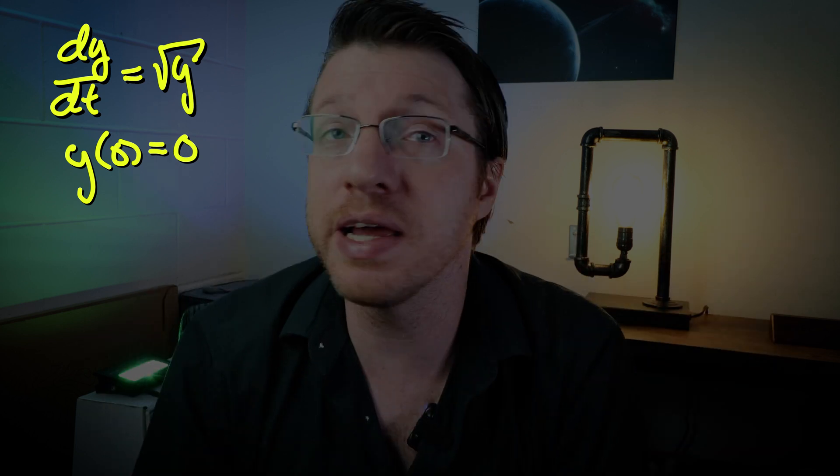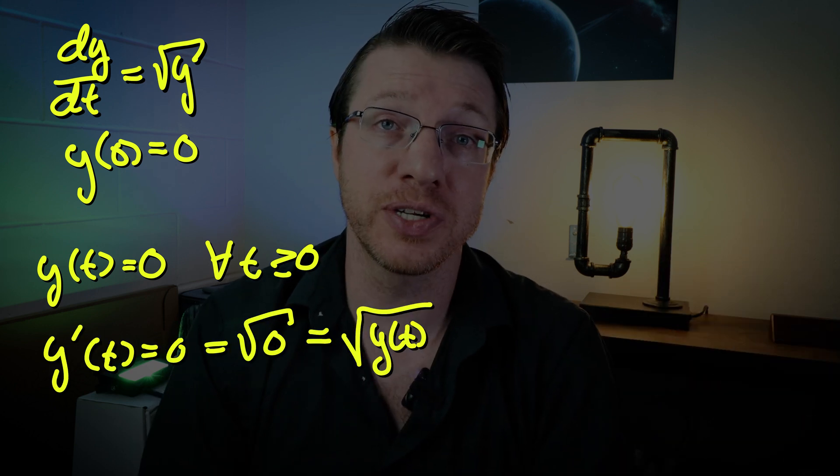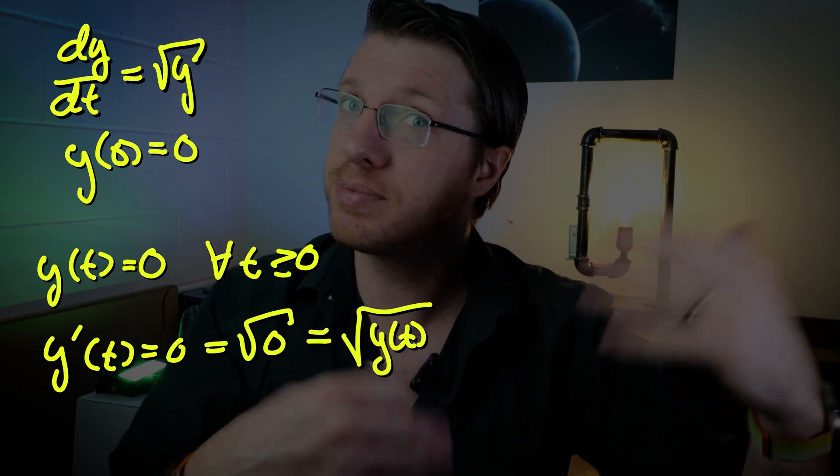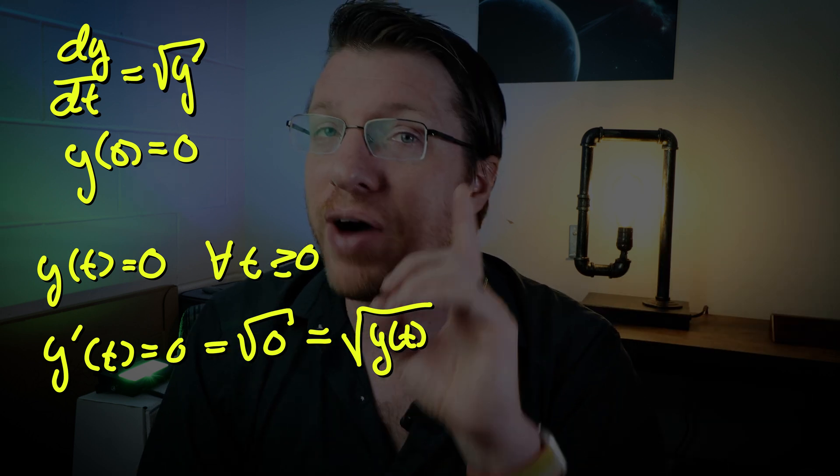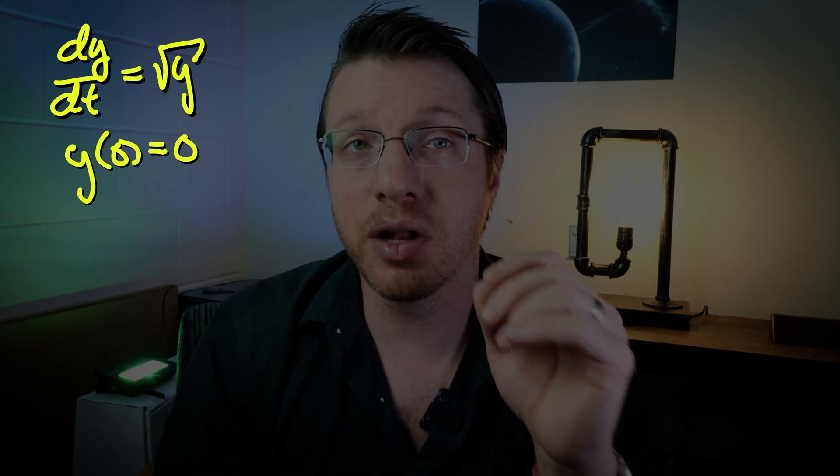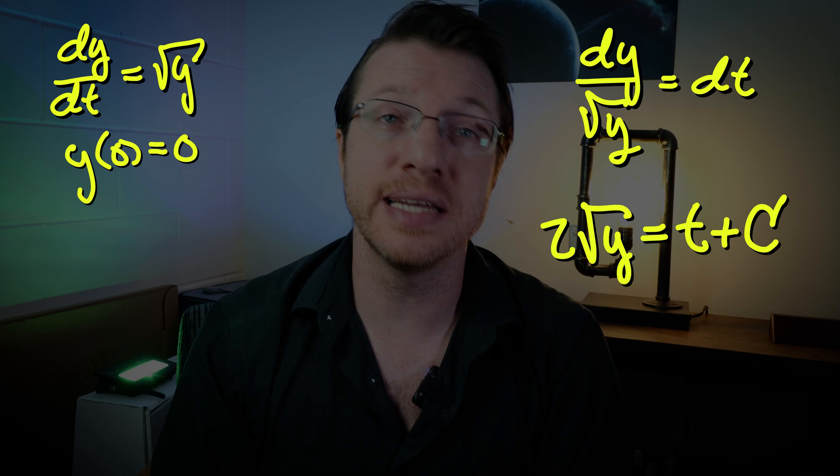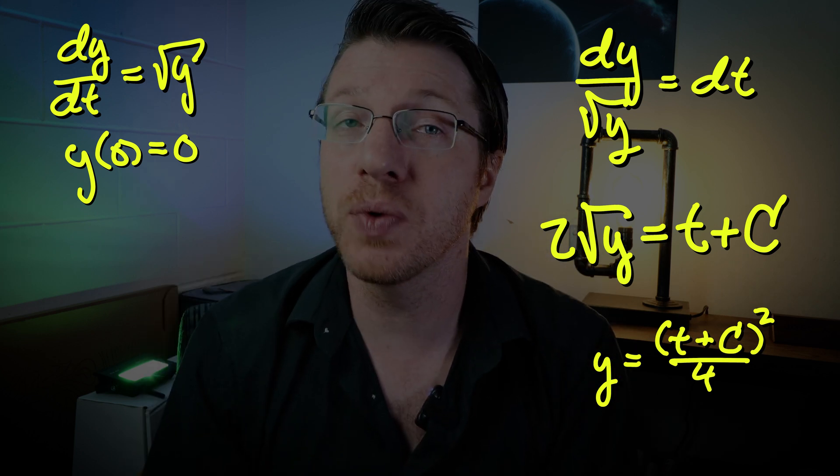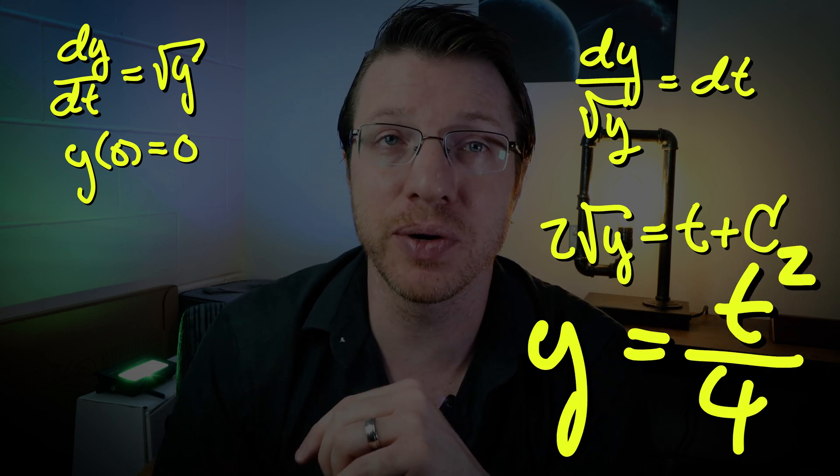First, we can take y to be a function that is identically 0. Then the derivative of a 0 function is a 0 function and the square root of a 0 function is again a 0 function. So that means that this must satisfy this initial value problem. We can find a different solution with different techniques. If we leverage our knowledge of separable differential equations, we find a general solution is y(t) is equal to (t + c)² divided by 4. And if we incorporate the initial condition, we see that c must actually be 0.